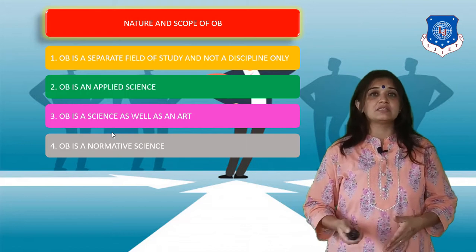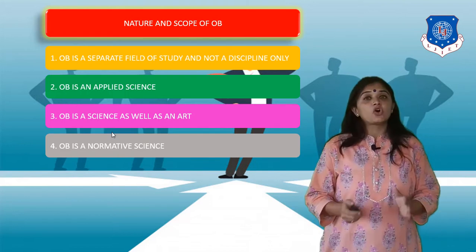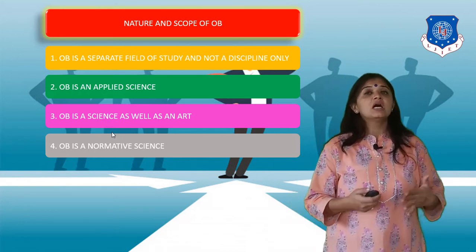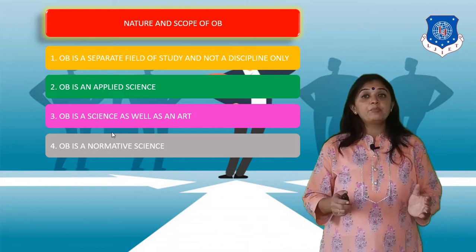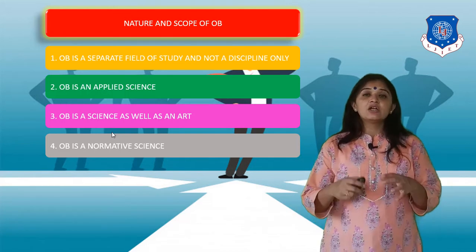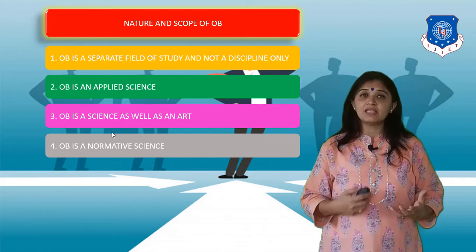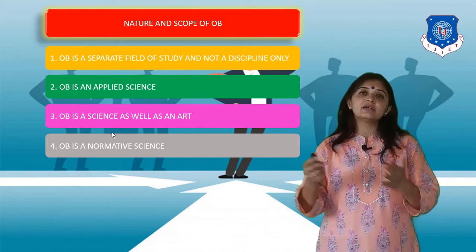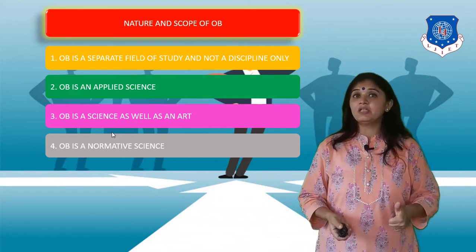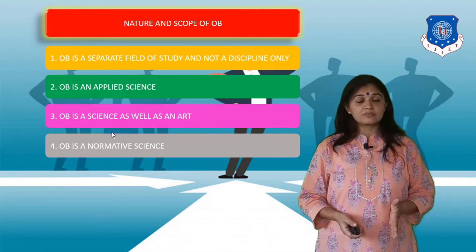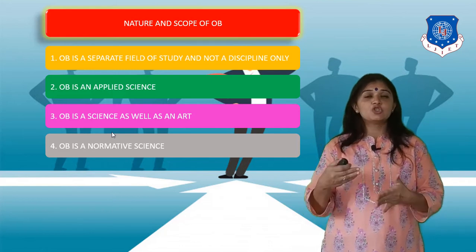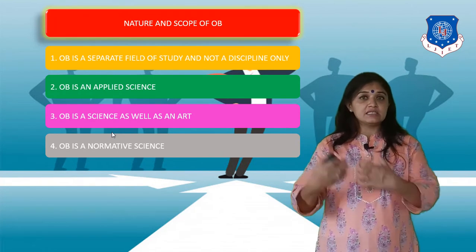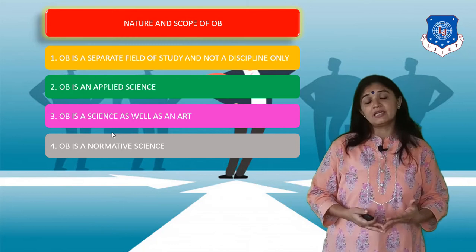Next, OB is a normative science. Normative science is the study of information which is developed, presented, or interpreted based on an assumed, usually unstated, preferred outcome. That means you first assume what outcome you need, then study the information and act upon it to get that outcome. OB is a normative science because we behave in such a manner so that we can influence other people's behavior and get desired outcomes from them.